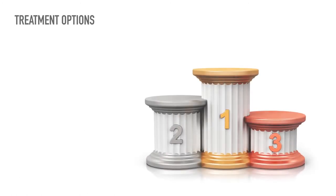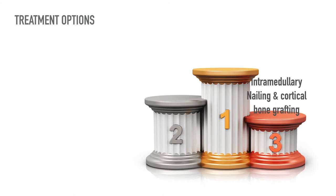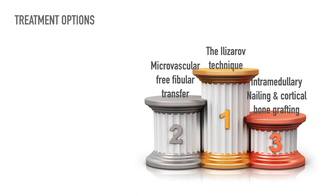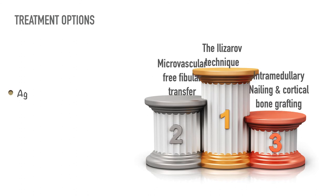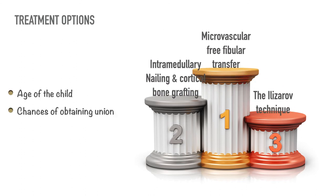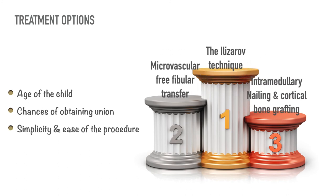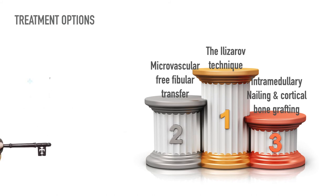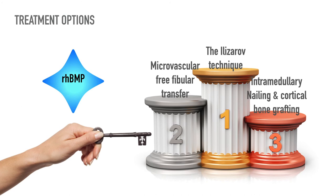Treatment options include intramedullary nailing and cortical bone grafting, microvascular free fibular transfer, and the use of Ilizarov's technique. The choice of treatment depends on multiple factors including age of the child, chances of obtaining union, simplicity and ease of the procedure, and cost. Because treatment of congenital pseudoarthrosis of tibia is challenging, recombinant human bone morphogenetic protein should be considered as an adjunct to treatment.